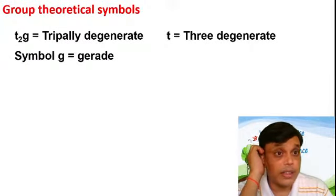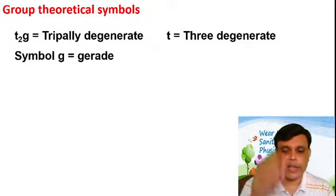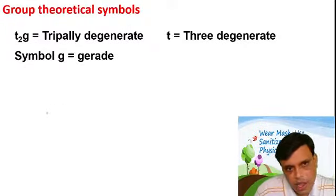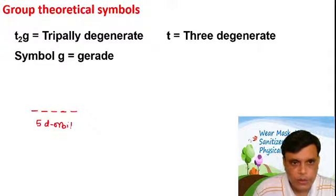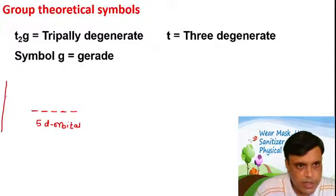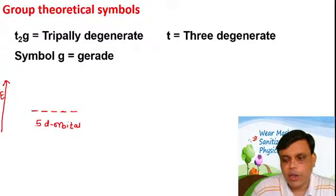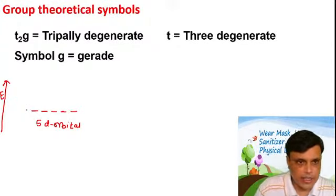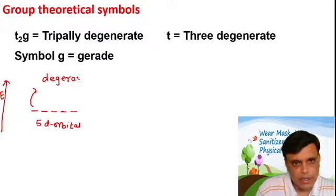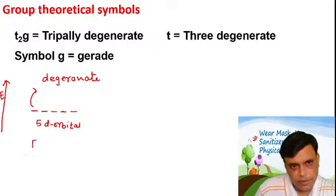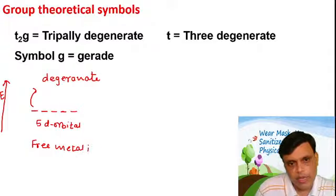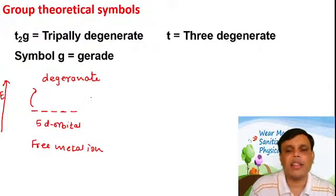Now let us look at group theoretical symbols. In a free metal ion, all five d orbitals are degenerate — they have the same energy. After complex formation, according to CFT, these five d orbitals split into two sets: the t2g set (dxy, dxz, dyz) and the eg set (dx²−y², dz²). Orbitals of equal energy within each set are called degenerate.